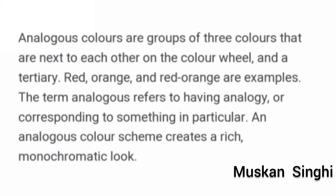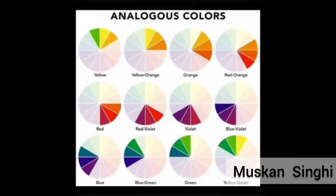What is the analogous color scheme? Analogous colors are a group of three colors that are next to each other on the color wheel — for example, red, orange, and red-orange. An analogous color scheme creates a rich monochromatic look. For instance, if we select yellow, the neighboring colors will be green and yellow-orange. If we select yellow-orange, the neighboring colors will be yellow and orange. So if we select any color from the color wheel, the colors immediately to the left and right are the analogous colors.